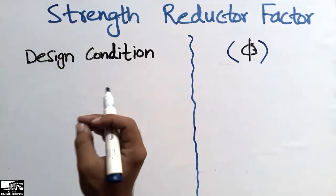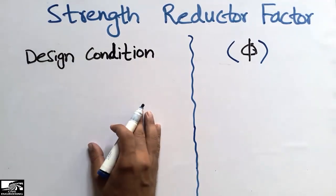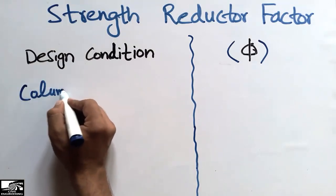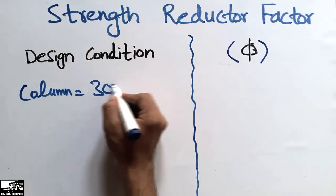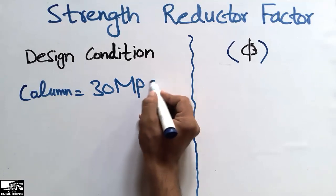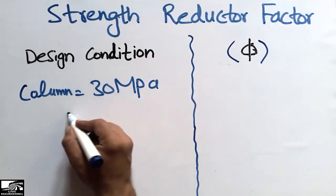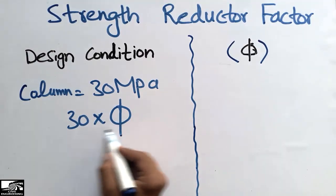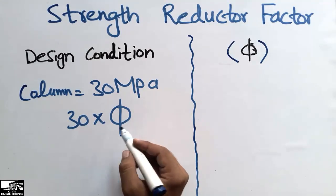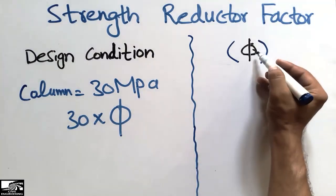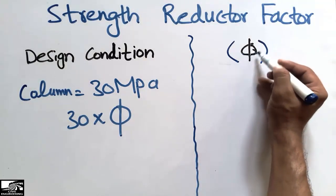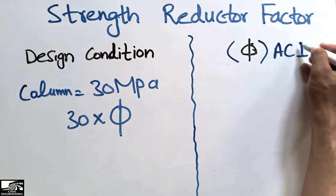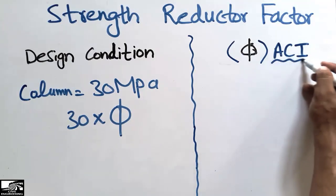We use it to reduce the actual strength of any structural member. For example, if we are using a column with a strength of 30 MPa, we multiply this 30 by the strength reduction factor, which is recommended by the American Concrete Institute. This strength reduction factor is usually represented by the small Greek letter phi (φ).